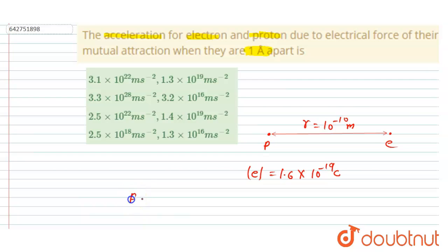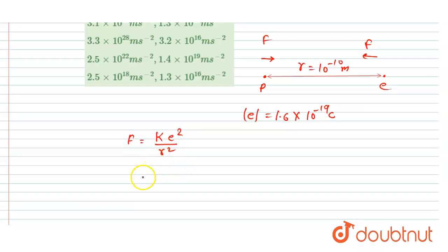be attractive in nature, right, since the charges are opposite in sign. So put the values: 9 × 10^9, and e². I will write, so the charges are opposite in sign but the magnitude is...